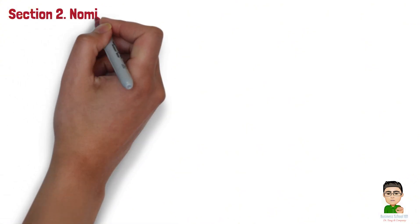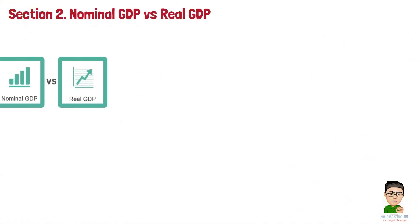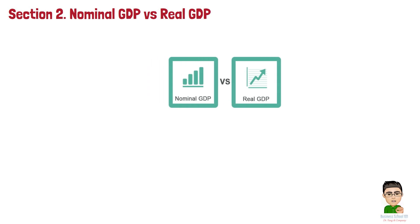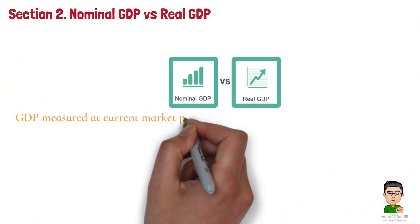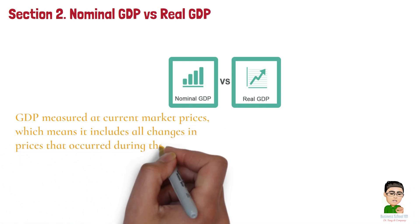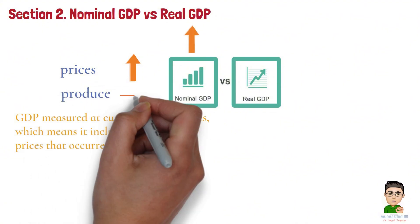Section 2: Nominal GDP vs Real GDP. Let's move to two key concepts: nominal GDP and real GDP. These two terms are essential to understanding how we measure economic performance, especially over time. Nominal GDP is GDP measured at current market prices, which means it includes all changes in prices that occurred during the year. If prices rise due to inflation, nominal GDP will rise as well, even if the actual amount of goods and services produced hasn't changed.